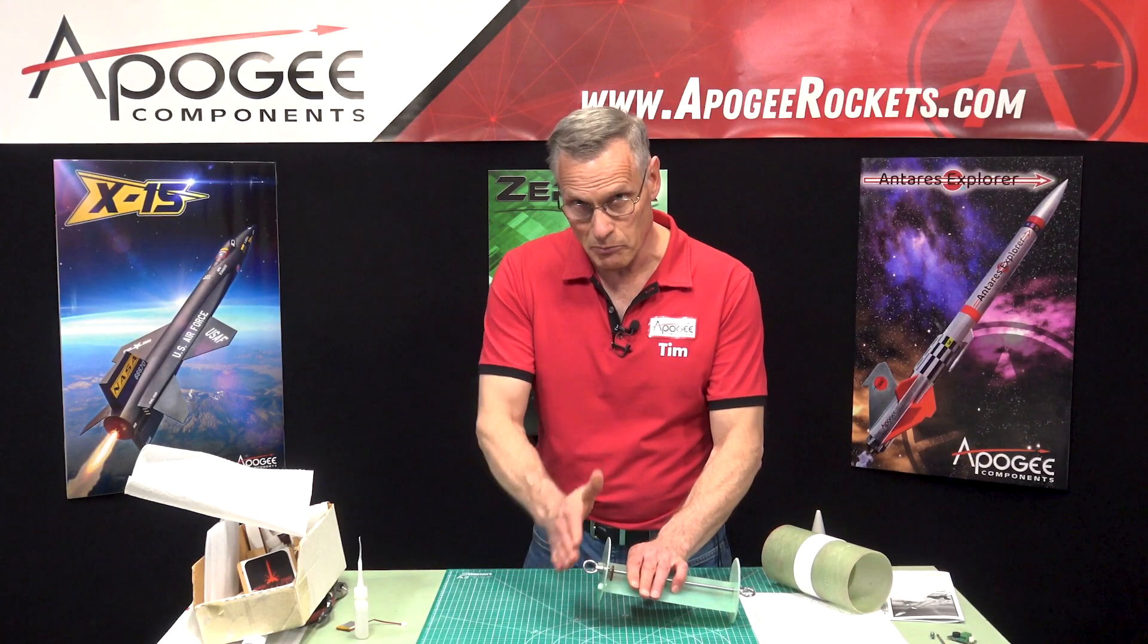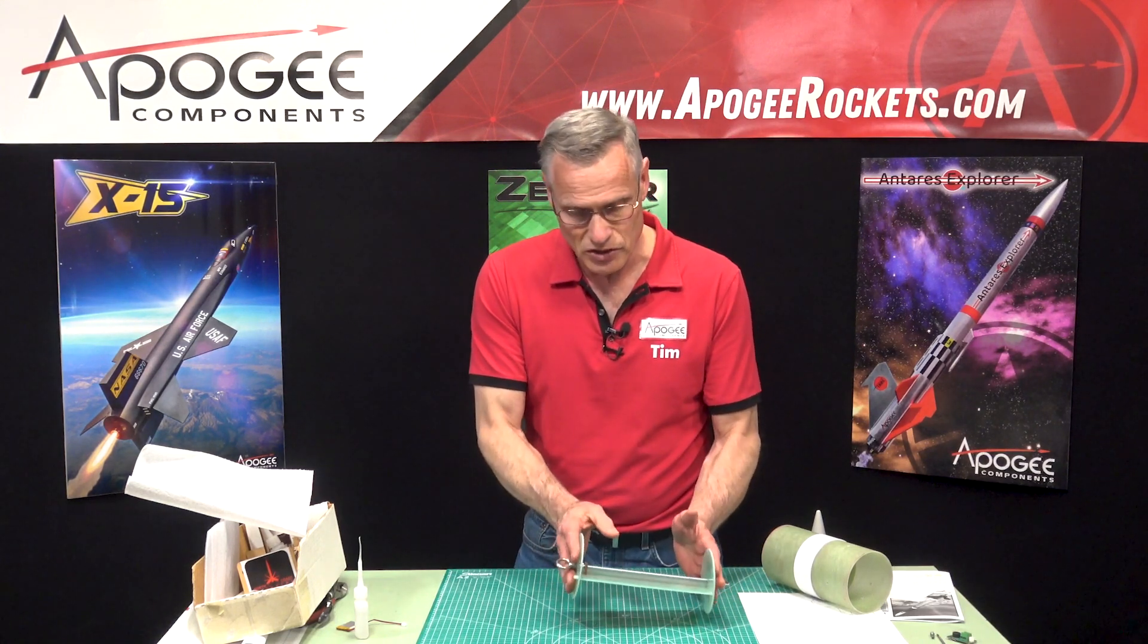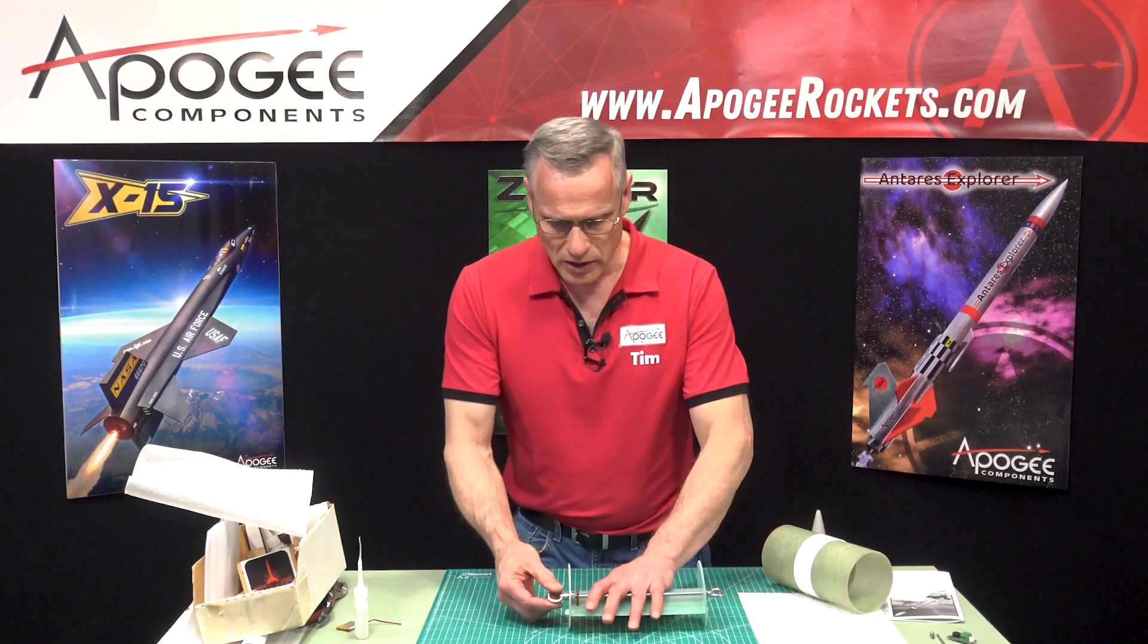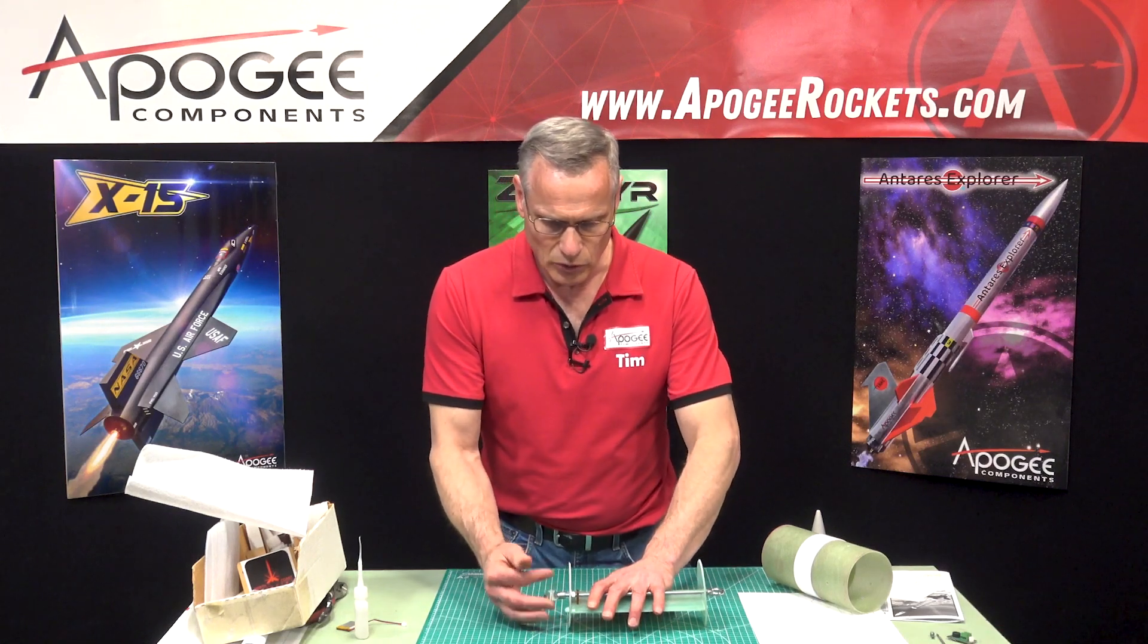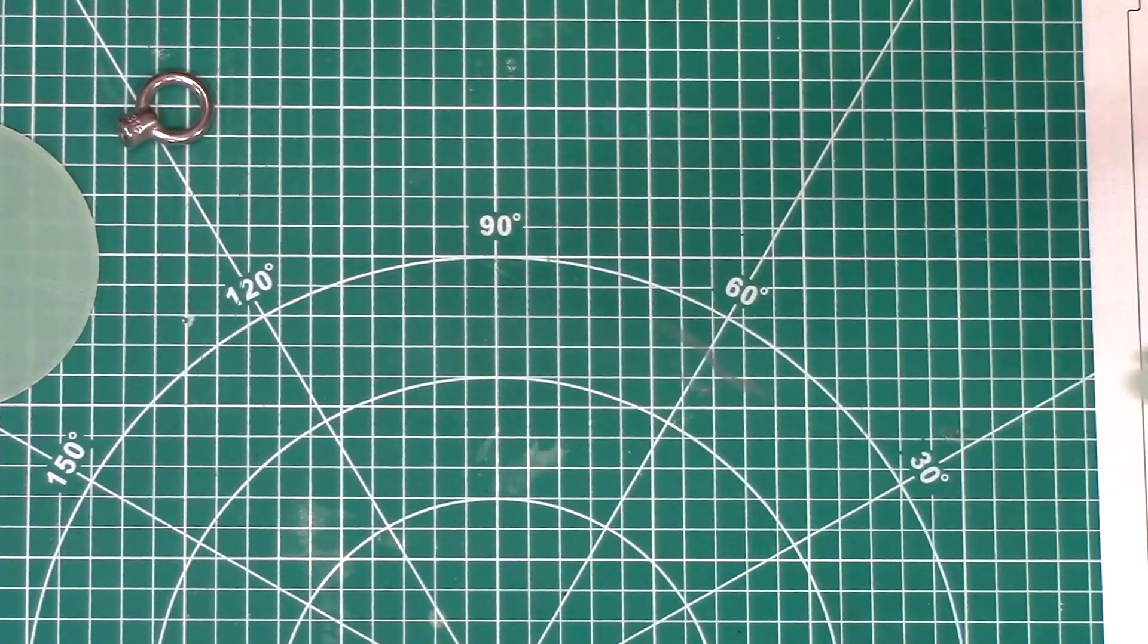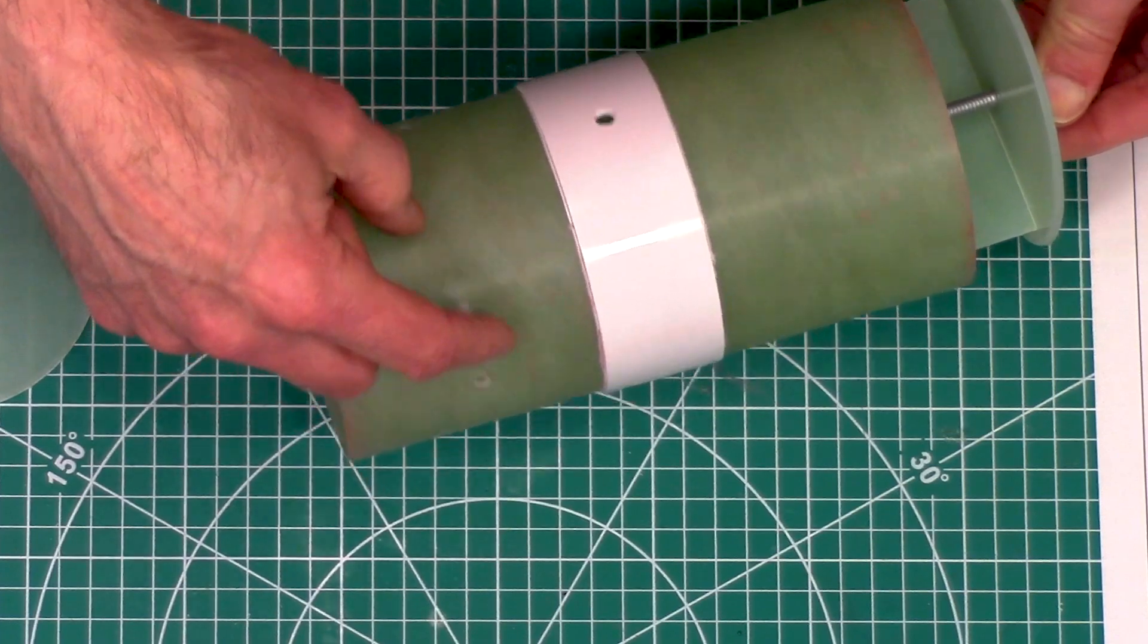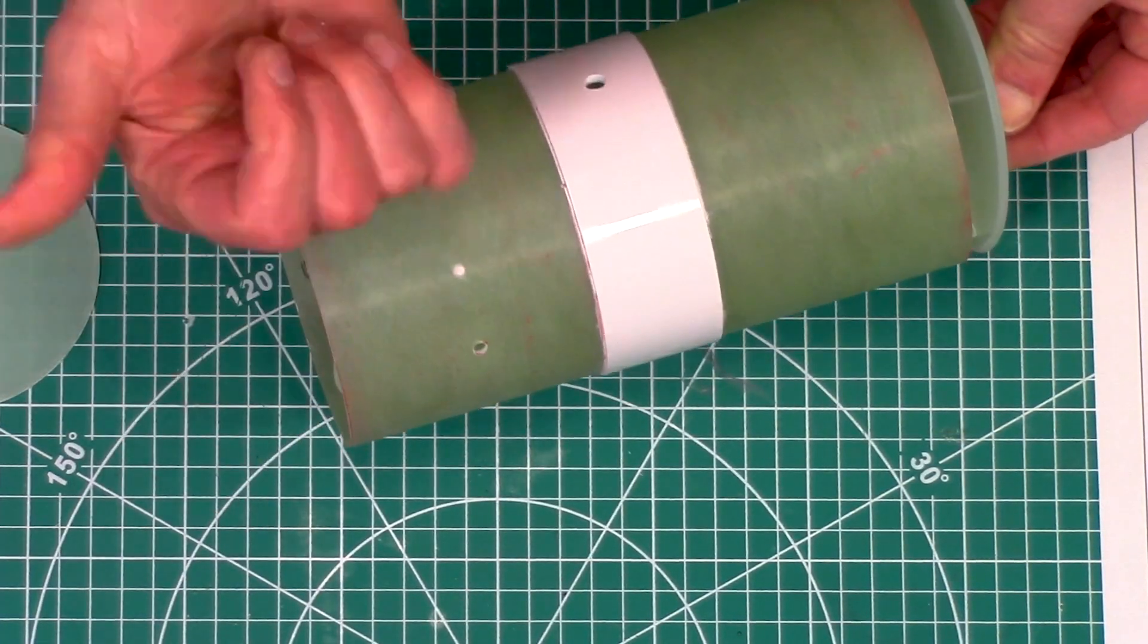But what that nut does—it prevents that bulkhead from bowing kind of like a drum head, because we want it nice and straight like that. So when you're assembling your rocket, you'll just slide it through.